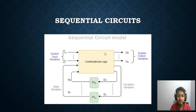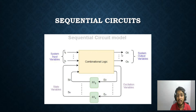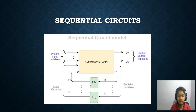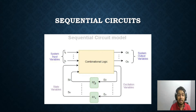For this entire system there are system input variables i0, i1, up to iN, and output variables o0, o1, up to oN. There are two new concepts here: excitation variables and state variables. We have separated the combinational logic from the flip-flops (memory circuits), and the flip-flop has inputs called excitation variables.